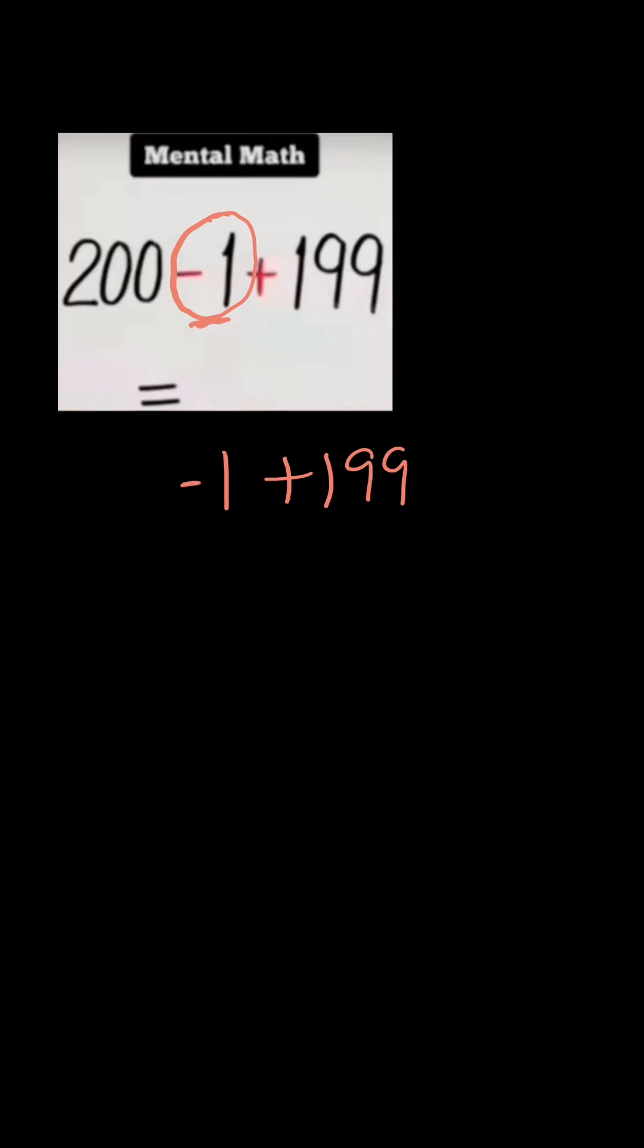Rewriting this, I can rewrite this way. This is positive 200, and this is also positive 199. Then this one is negative 1. Wherever the 1 goes, the negative must follow because it is a negative number.